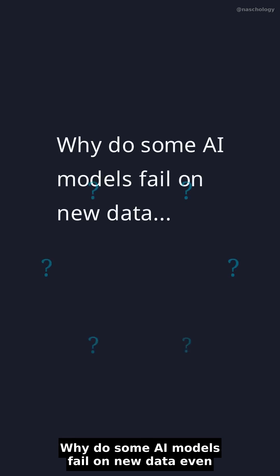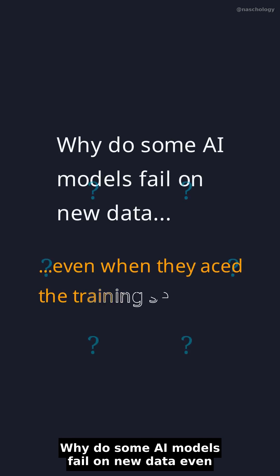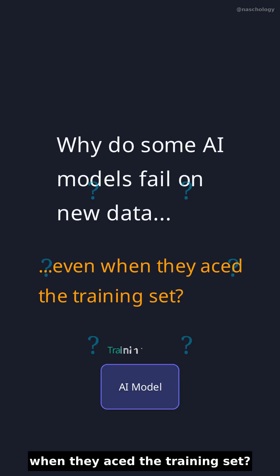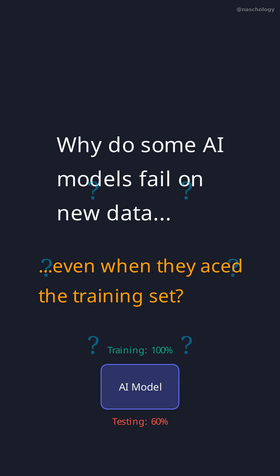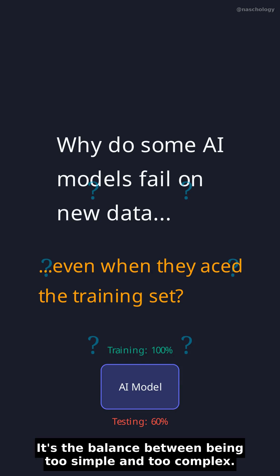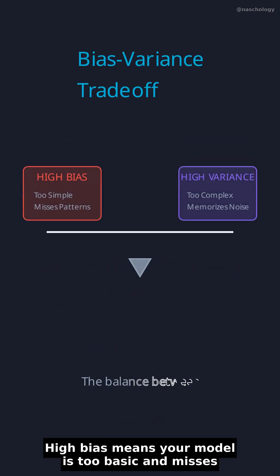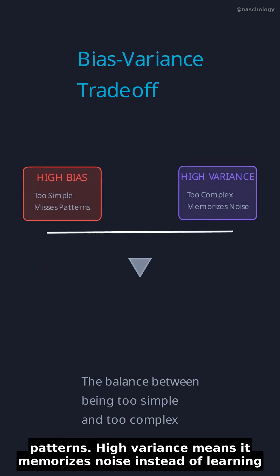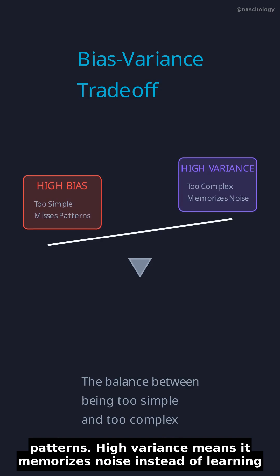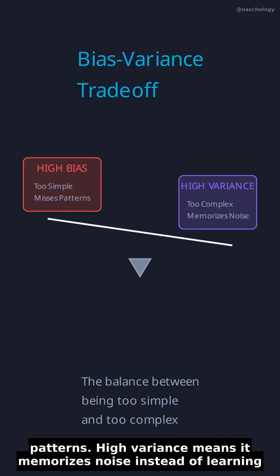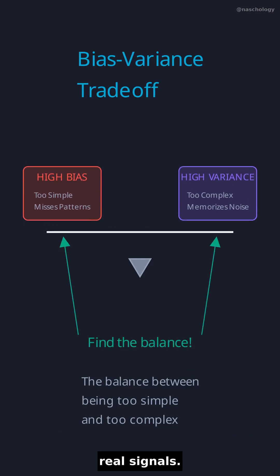Why do some AI models fail on new data even when they aced the training set? It's the balance between being too simple and too complex. High bias means your model is too basic and misses patterns. High variance means it memorizes noise instead of learning real signals.